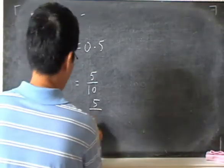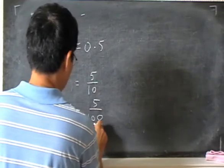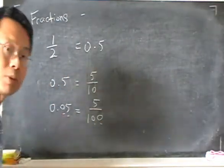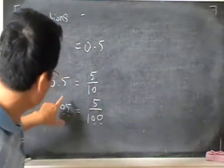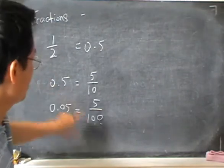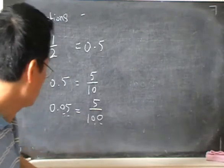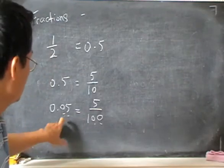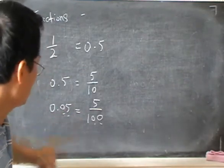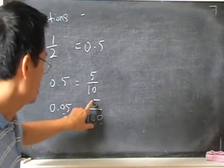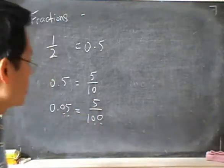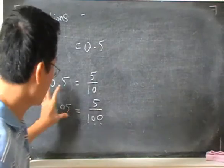And at the bottom, I have one zero zero. Two zeros because there are two decimal places. So this is how the number of places in the decimal relates to the number of zeros below. And the number after the decimal point relates to the number on top of the fraction. And this is how we convert from a decimal to a fraction.